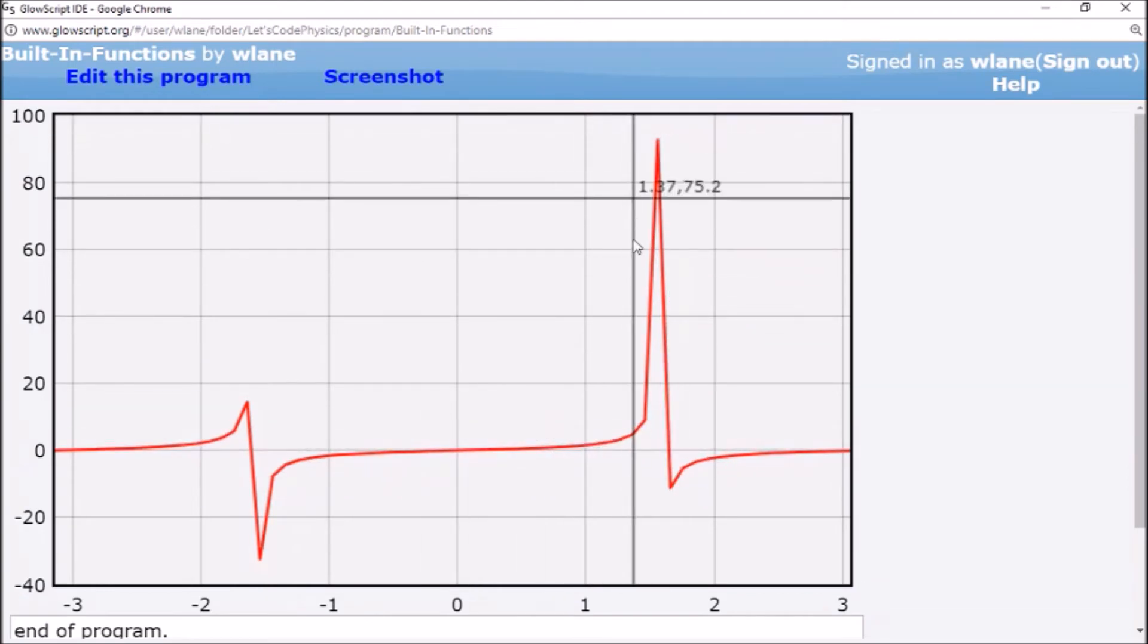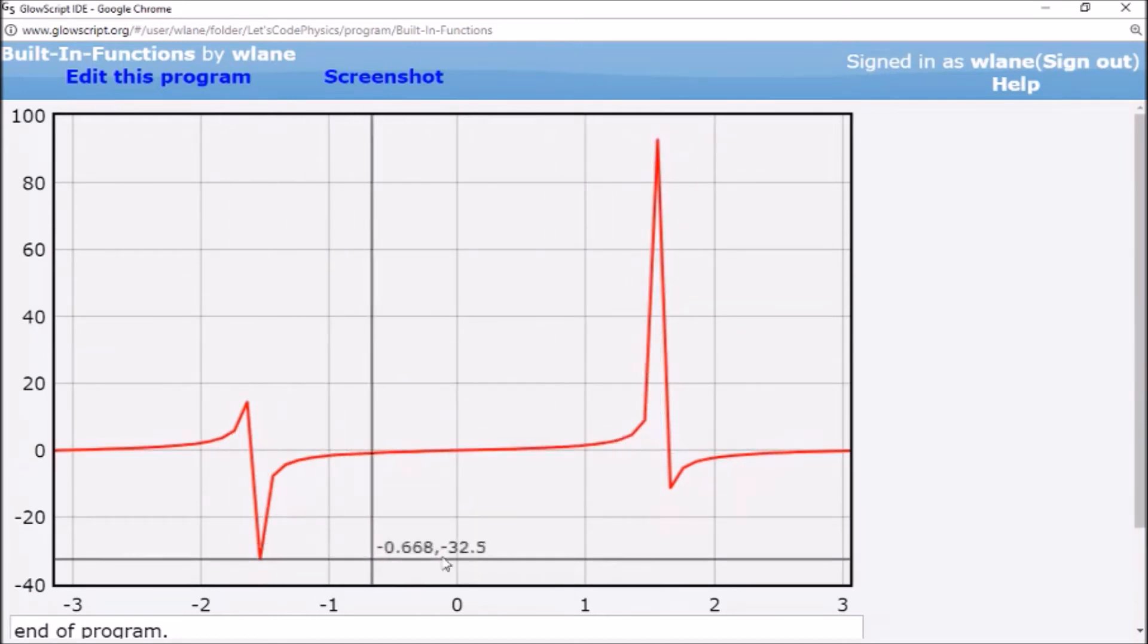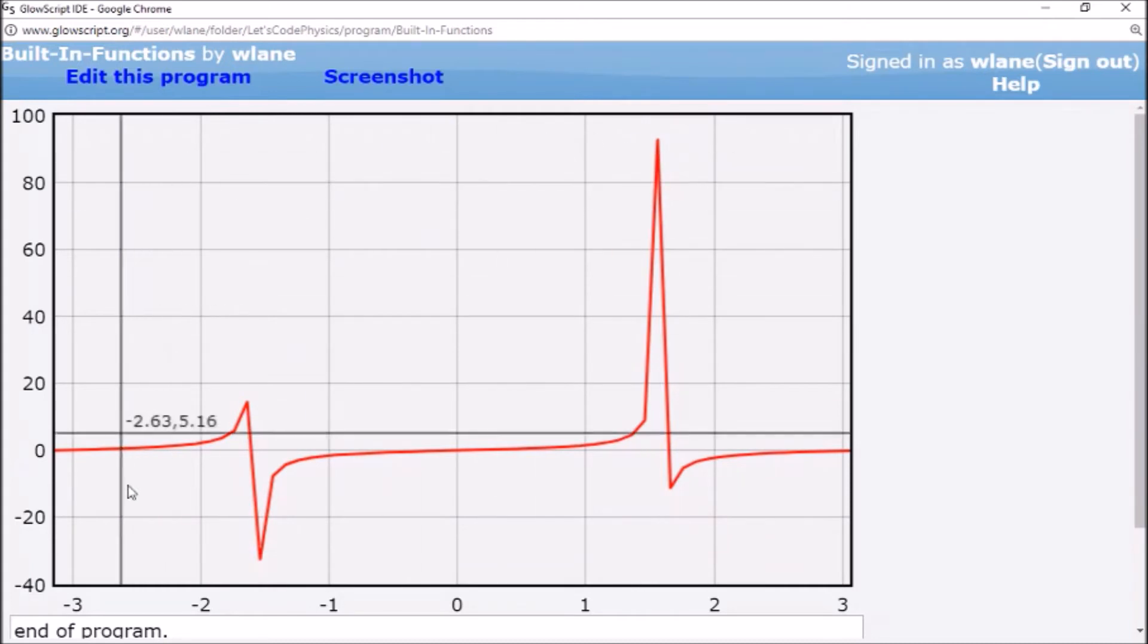Of course, tangent gets you this asymptote at pi over 2 and negative pi over 2. You notice it doesn't go all the way up to infinity because, remember, this is not a graph of the function per se. This is a graph of different data points on the function.